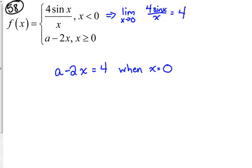Because the two pieces have got to meet. So let's plug in 0 for x. That leaves us with just a equals 4. That makes this function continuous.